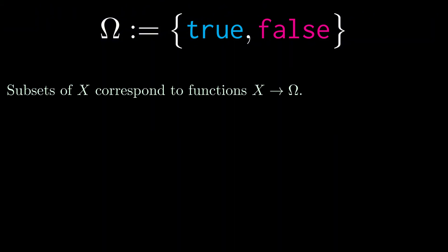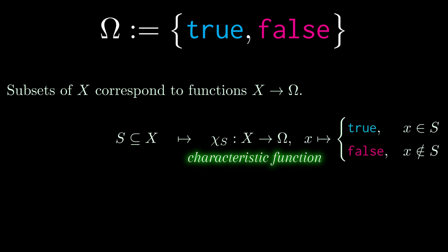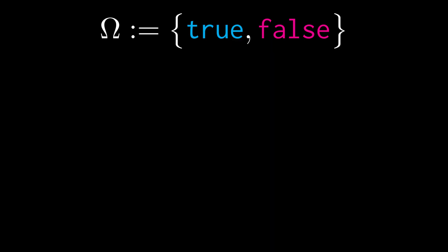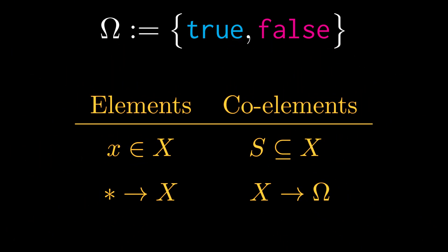In the opposite category, an arrow g from x to y is a preimage function, which means that it sends a subset of x to a subset of y. In particular, it's the subsets that serve as an analog of elements in this opposite category. To really drive this point home, let omega denote the two-element set whose elements are called true and false. Then, subsets of x correspond to functions from x to omega.